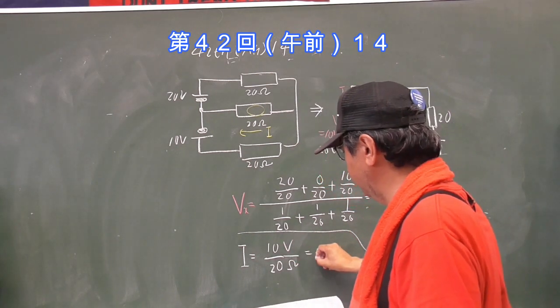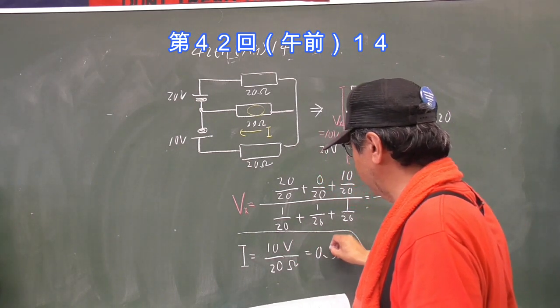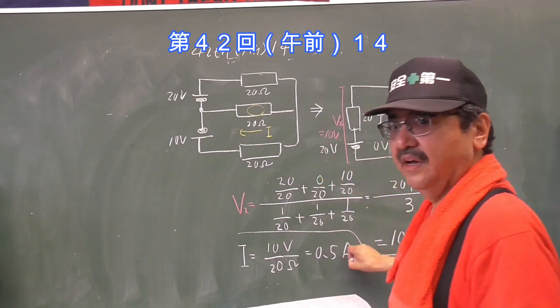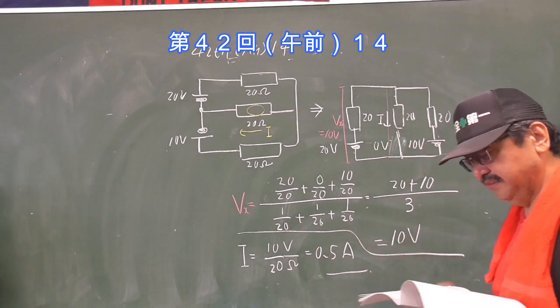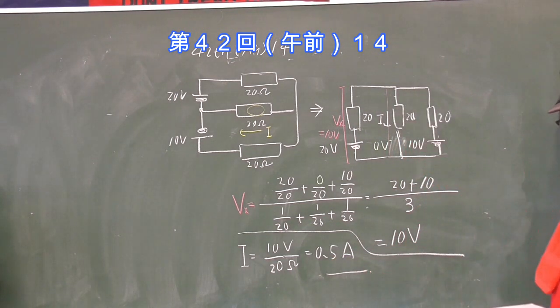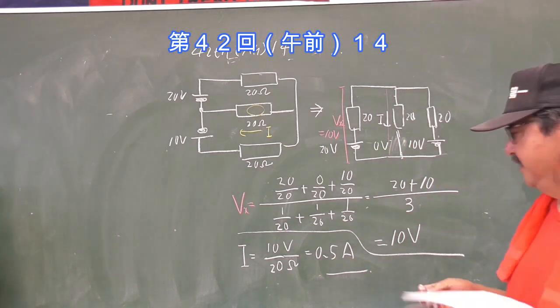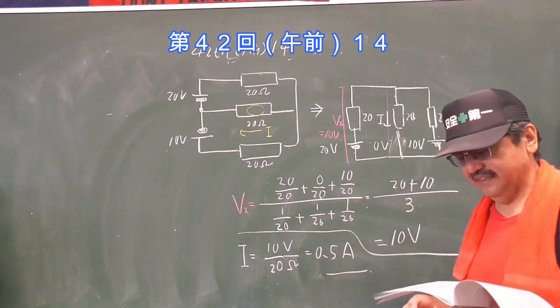電流は20Ω分の10V、イコール0.5A。はい、終わり。そんなに難しい問題にはなりませんでしたね。